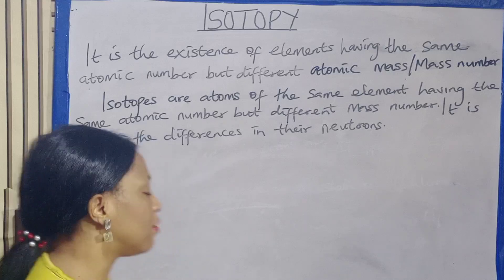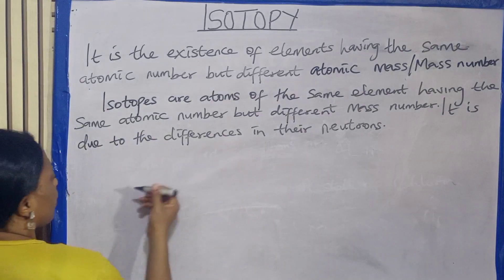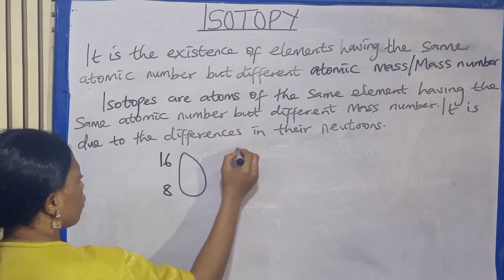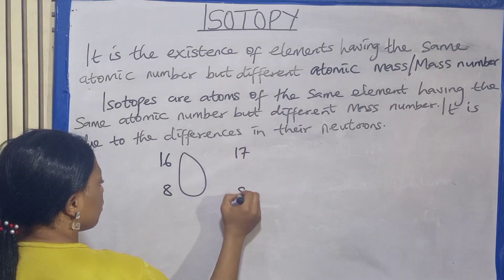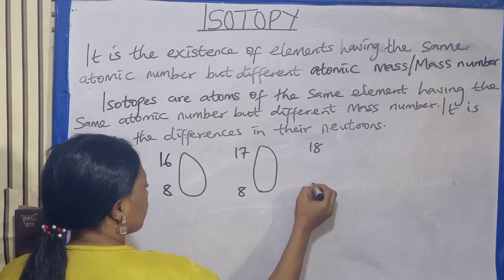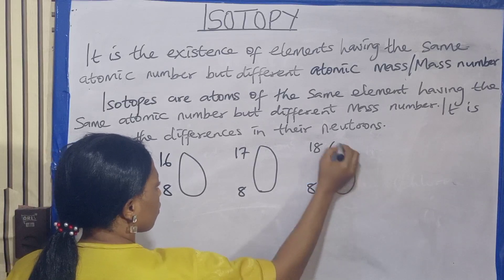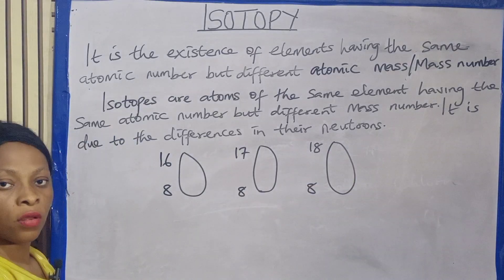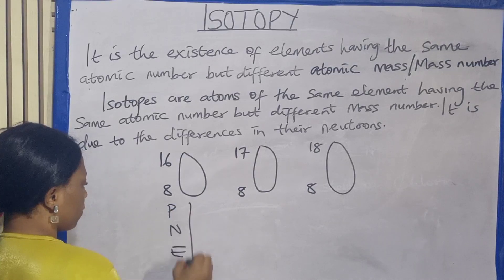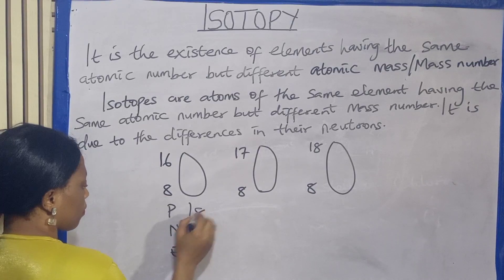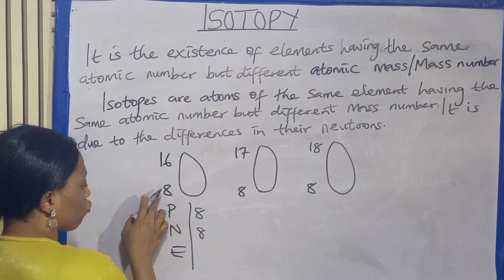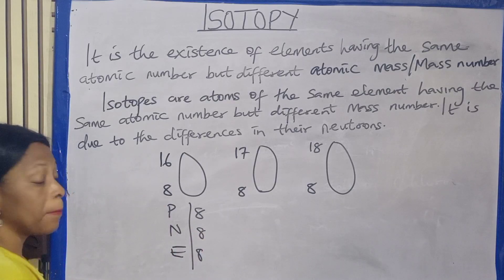Now let's look at a practical example. For example, you have Oxygen-16, Oxygen-17, and Oxygen-18. So if you are asked to find the proton, neutron, and electron: for Oxygen-16, the proton will be 8, the neutron will be 16 minus 8, and the electron will also be 8.